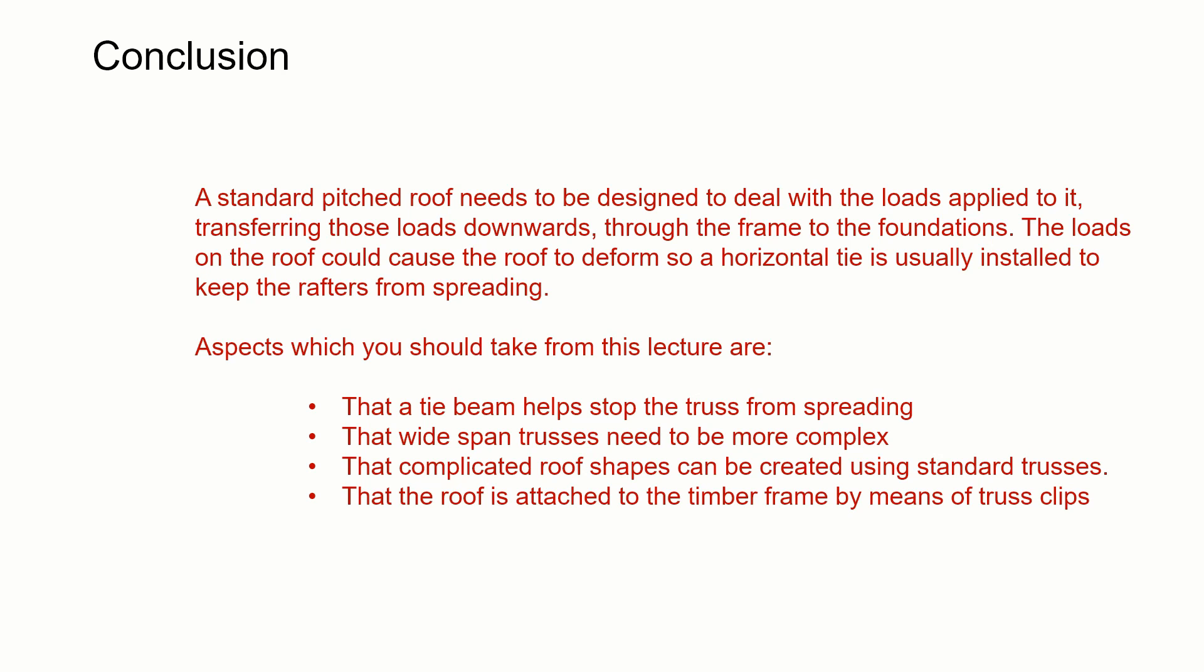So in conclusion, a standard pitch roof needs to be designed to deal with the loads that are applied to it. So that could be dead loads and live loads. And it needs to be able to transfer those loads downwards through the roof to the foundation. But because there's loads applied to it, there's a possibility that the roof could deform. So we need something at eaves level to be able to prevent that, to stop it from pulling apart. So aspects that you should take from this lecture are that a tie beam is required to stop the truss from spreading, that when we have a wide span of a truss, the truss either needs to be heavier or more complex, and that complicated roof shapes, gables and T intersections can be formed using standard trusses and specialist items, and that the roof is attached to the timber frame by means of truss clips.